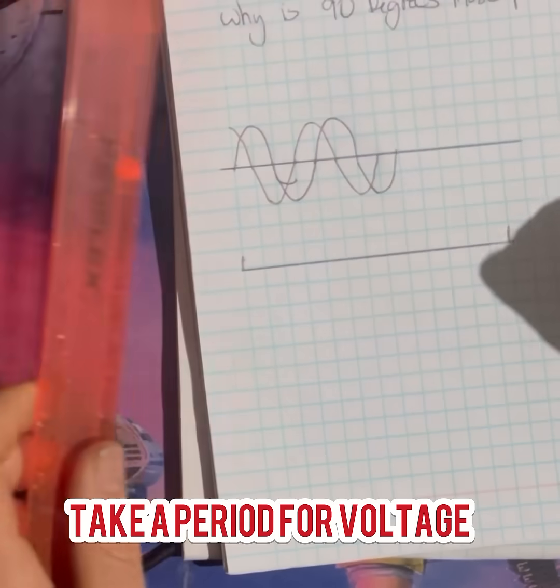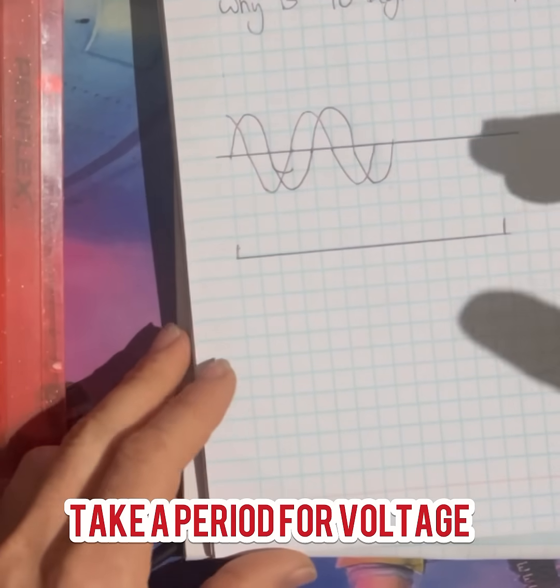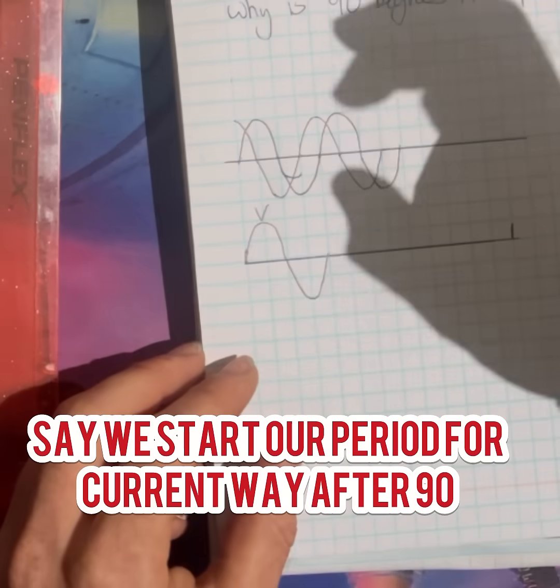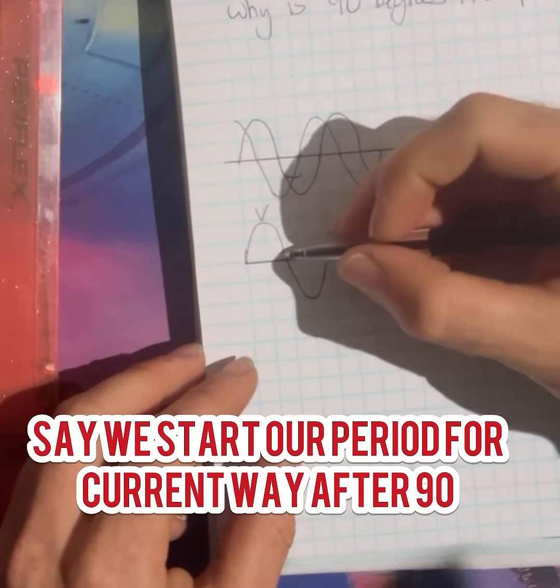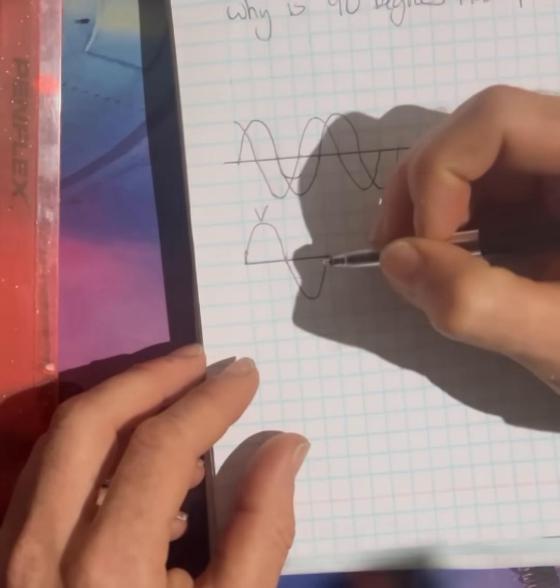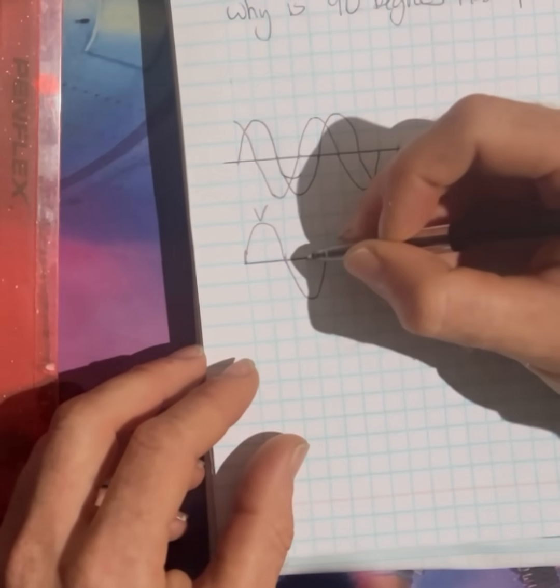Your period of the current will normally be the same as the period of your voltage. We start way after the voltage. Say you got your 90 degrees phase shift here, say they wanted to start over here.